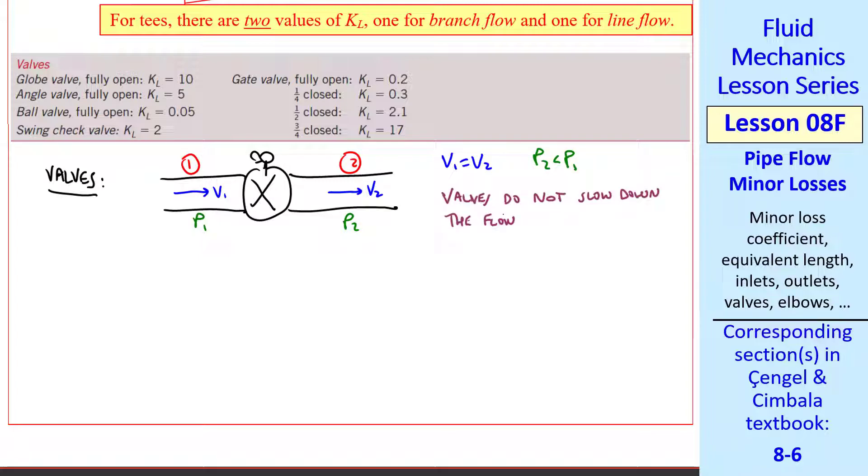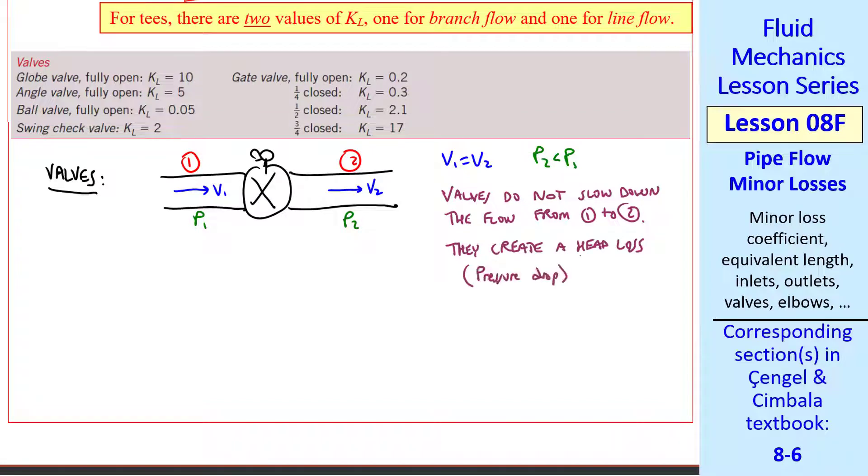Here's where students get confused. Valves do not slow down the flow from 1 to 2. Rather, they create a head loss, or a pressure drop, that slows down the whole system.